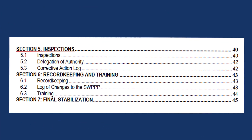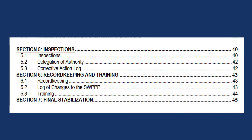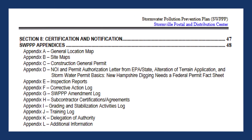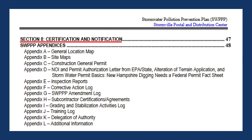Section 5 covers the roles and procedures for BMP inspections and corrective actions. Section 6 covers plans for record-keeping and employee training regarding your plan. Section 7 covers your plan for the final stabilization of the site following the completion of the project. Section 8 is where you'll place all the necessary certifications, site maps, record-keeping logs, and other important documents related to your plan.